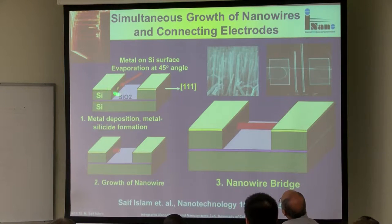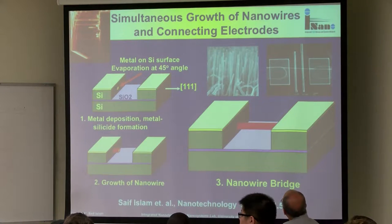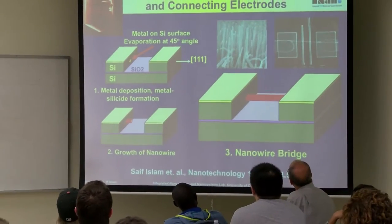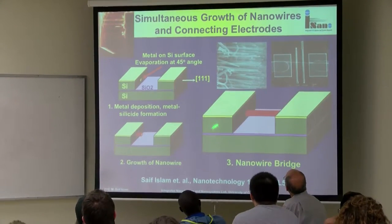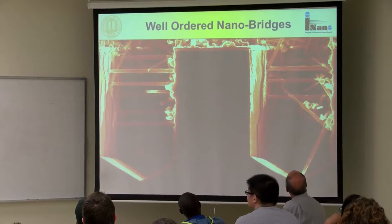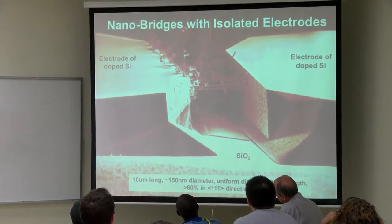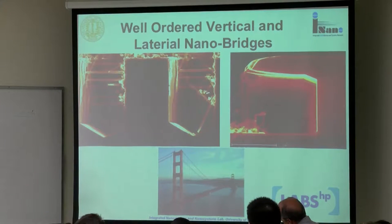So we developed a technique in our group where, rather than making one device at a time by growing them, we made electrodes first and then decided to grow nanowires from one side of the electrode, continue to grow, and complete the growth. They're like a bridge — between two walls, if you grow a nanowire, you don't have to make contact; it's already there. Now you have a source and drain, and if you need a gate, that can be post-processed.